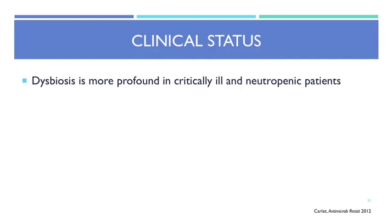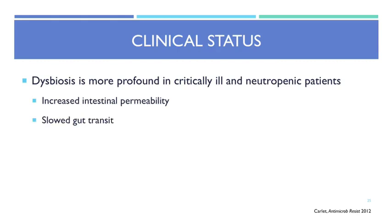Patient-related factors: dysbiosis is more common in critically ill and neutropenic patients. They have increased intestinal permeability, making them prone to bacterial translocation. Slowed gut transit means antibiotics linger longer in the GI tract. And critically ill patients are already at higher risk for hospital-acquired infections, so if they develop an infection requiring antibiotics, the cycle of dysbiosis starts again.